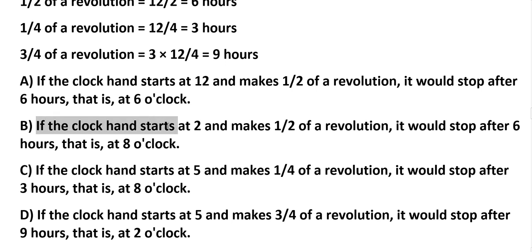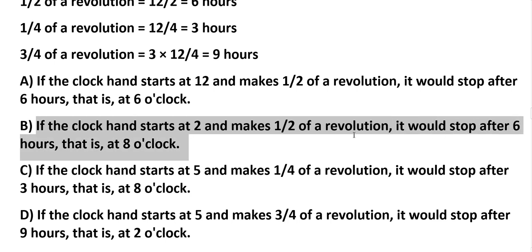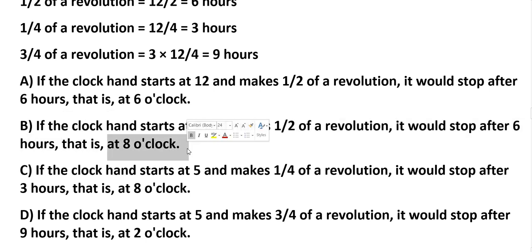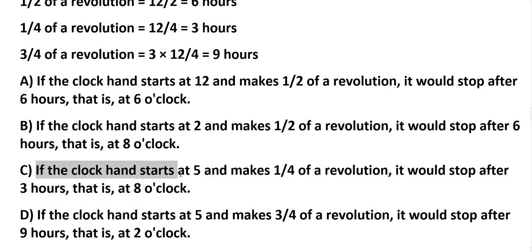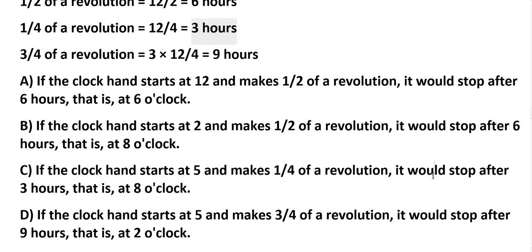B: if the clock hand starts at 2 and makes half revolution, it would stop after 6 hours — that is, at 8 o'clock. C: if the clock hand starts at 5 and makes one-fourth revolution, one-fourth revolution means 3 hours. It would stop after 3 hours, so 5 plus 3 equals 8 — it will stop at 8 o'clock.